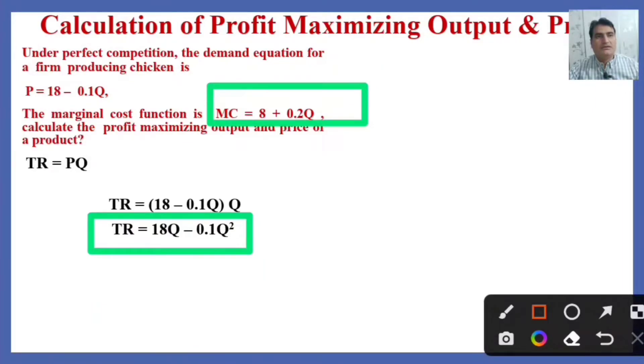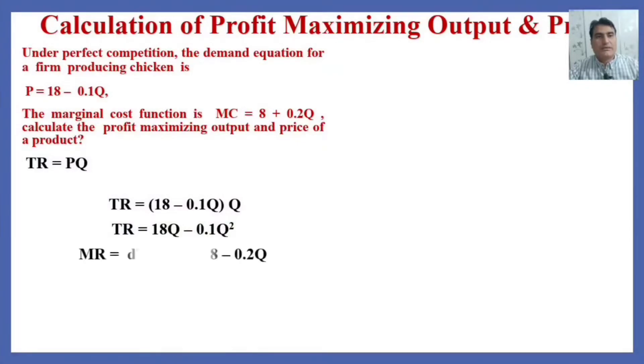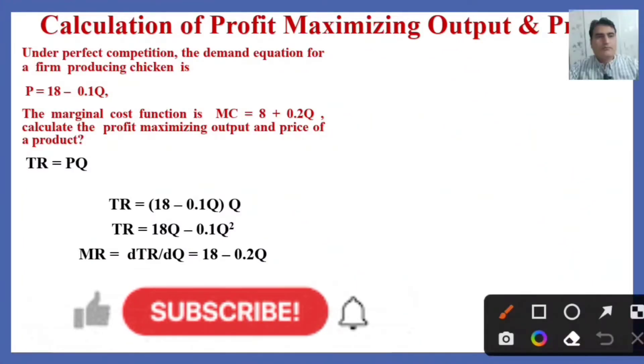The firm can earn the maximum profit at this point. To find the marginal revenue, we shall use the power derivation rule. Marginal revenue means the change in total revenue due to one unit sale. So using the power derivation rule, the marginal revenue will be MR = 18 - 0.2Q.